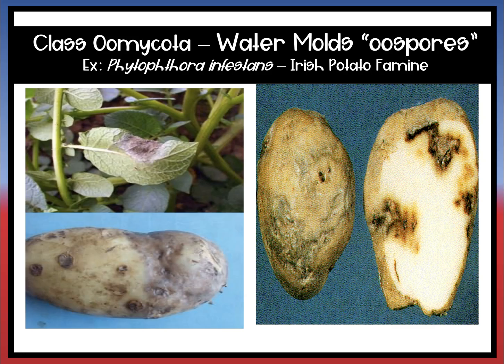The next one is actually a class — class Oomycota, which is a type of water mold. An example of this is from the Irish potato famine, when the potatoes in Ireland were infected with this fungi and it ruined a lot of their crops, leading to a lot of famine in that country at that time.